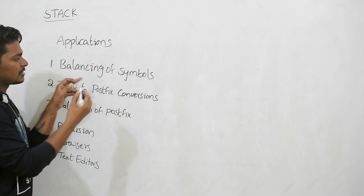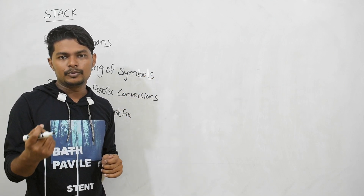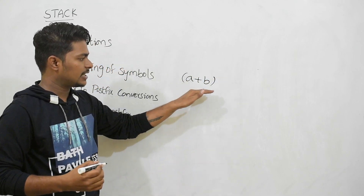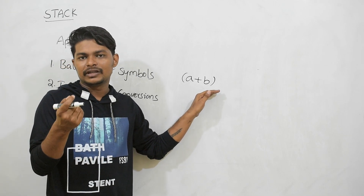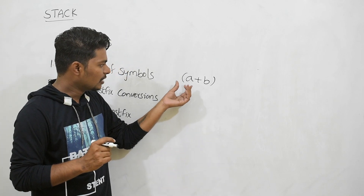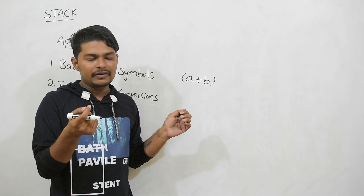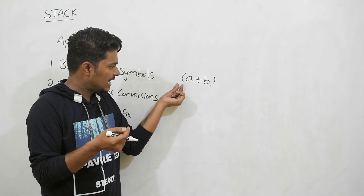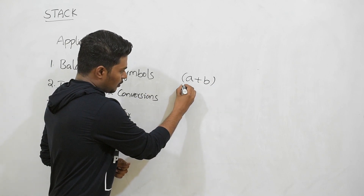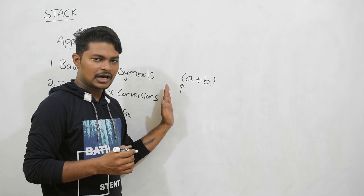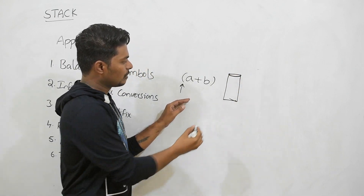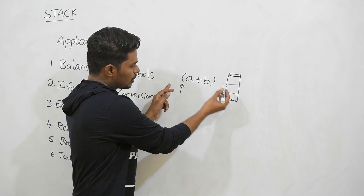The first application of the stack is balancing of symbols. Normally we evaluate expressions in the computer — for example, a plus B. The compiler scans each and every symbol to make sure there is no missing symbol. Whenever it encounters an open bracket or open parenthesis, it pushes it into the stack.